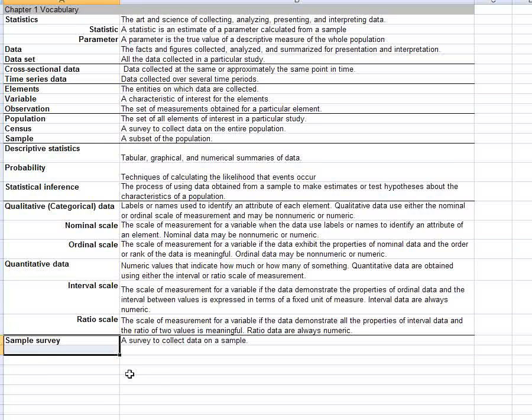So last little definition is just a sample survey, which I think you understand what that definition means anyway. It's just a survey used to collect data on a sample. And so in the next video, we're going to look at descriptive statistics. We're going to start looking at if I have a lot of data, how do I make tables, graphs, and numerical summaries of this data. And we're also going to look at some tips and tricks about how to do this in Excel.